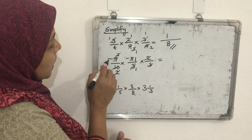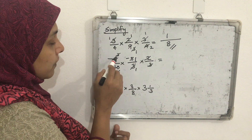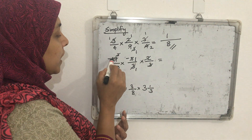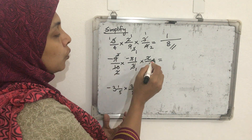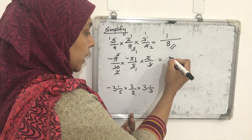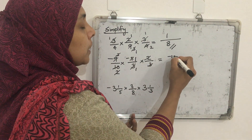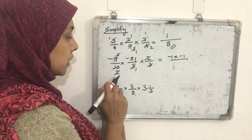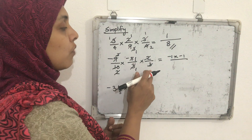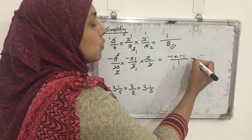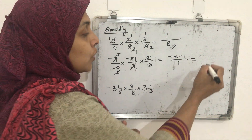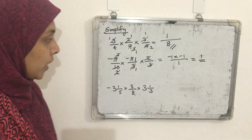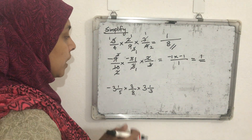After all cancellations, the numerator has −1 × −1 × 1. The denominator has 1 × 1 × 1 = 1. Minus 1 times minus 1 equals 1, so the answer is 1/1 = 1.